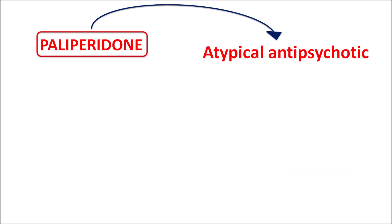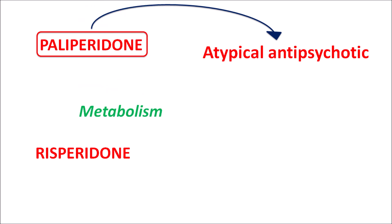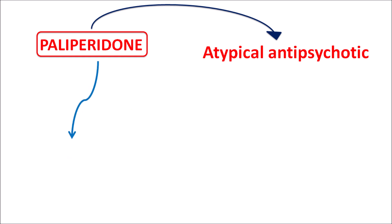Another related drug is risperidone, which is also an atypical antipsychotic. When risperidone undergoes metabolism, it produces the active metabolite paliperidone. So paliperidone is the active metabolite of risperidone, and both drugs act as atypical antipsychotics.